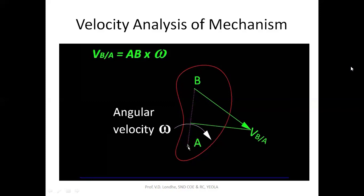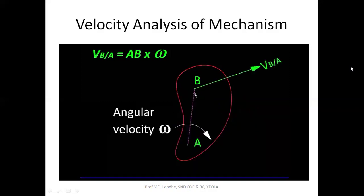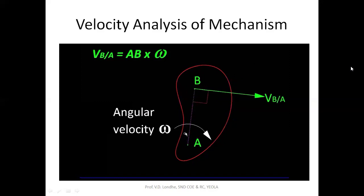But the distance between two particles of a rigid body can never alter. Therefore, a velocity component along AB is not possible — it would either shorten or separate the two points, both impossibilities for a rigid body. So the only choice we are left with is the perpendicular direction to AB. Our conclusion is: the velocity of a point relative to another point in the same rigid body will always be directed perpendicular to the line joining them.